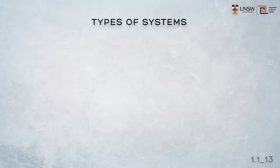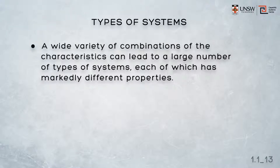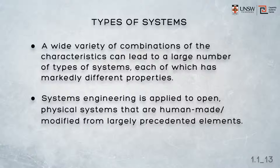Now, based on those four classes of system, there are a wide variety of combinations that can lead to a large number of types of systems, each of which has markedly different properties. But it's important to recognise that in this course, and in systems engineering, we're talking about open, physical systems that are human-made or modified from largely precedented elements.